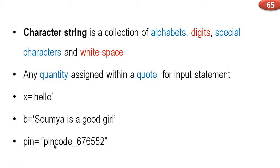For example, pin = 'pincode_676552'. You can use single quotes or double quotes — it's not a problem. That value is a string.